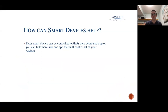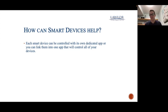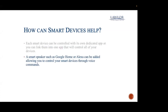So how can smart devices help? Each smart device is controlled by its own app, or you can link them together into one app that controls everything. You might have lights from one company and smart plugs from another — they all have their own apps. Instead of opening a bunch of different apps, you can put them all into one dedicated place, open up one app, and control everything in your smart home.